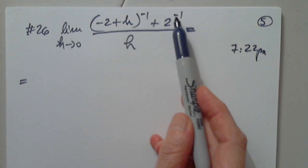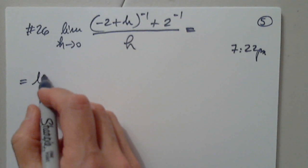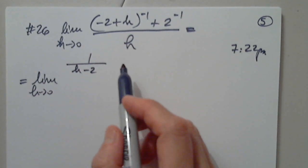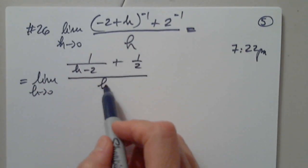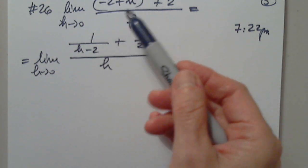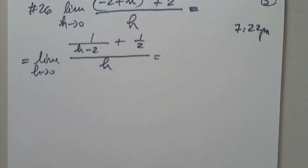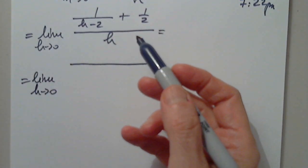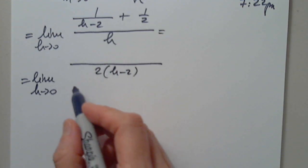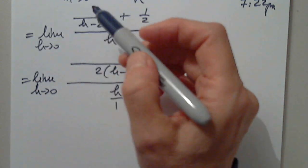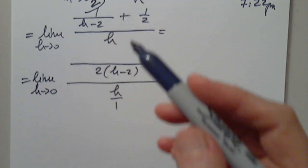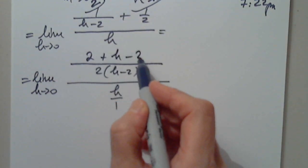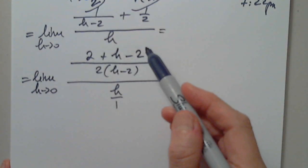First of all, I realized that these two quantities have power negative 1. So it means that it has h minus 2 plus 1 half divided by h. You can write it as negative 2 plus h, it doesn't matter. So then I have to find the least common denominator. The least common denominator is 2h minus 2 divided by h over 1. Obviously, this needs an adjustment of 2, and this one needs an adjustment of h minus 2. So, 2 plus h minus 2 — we know that these two go away.